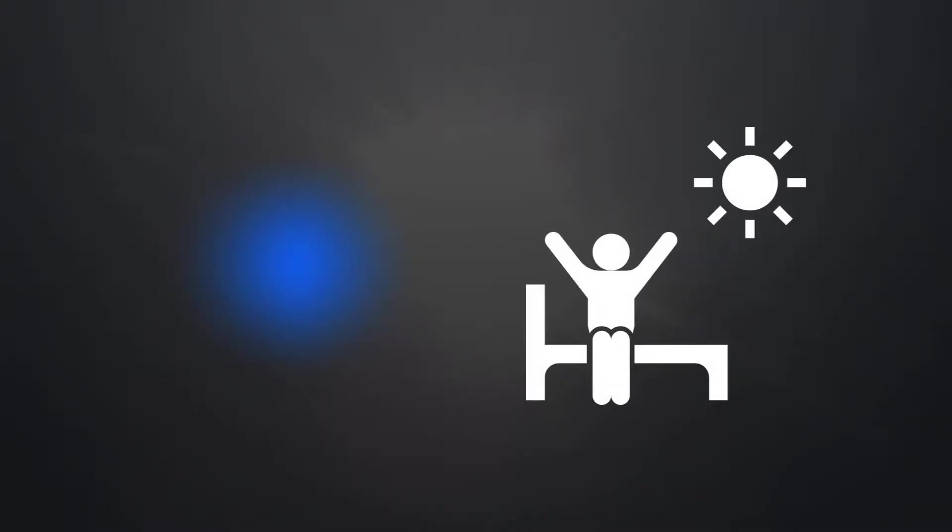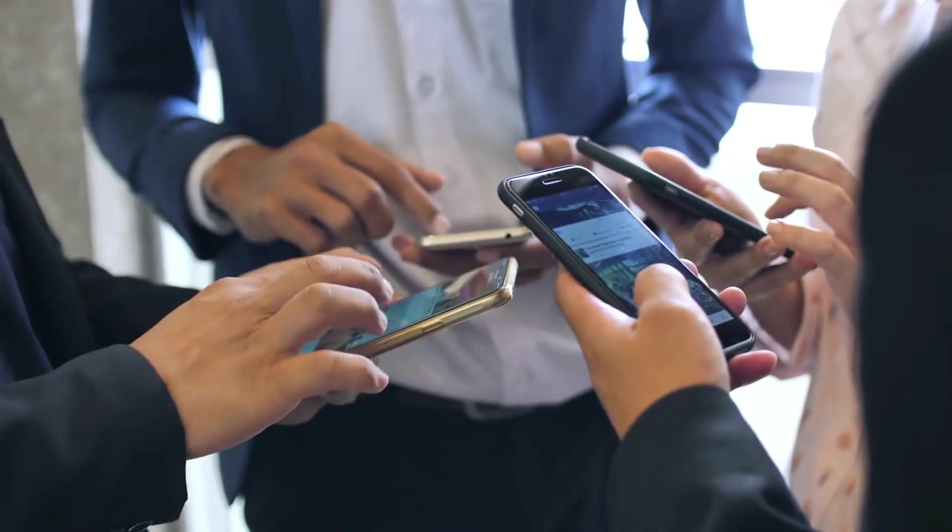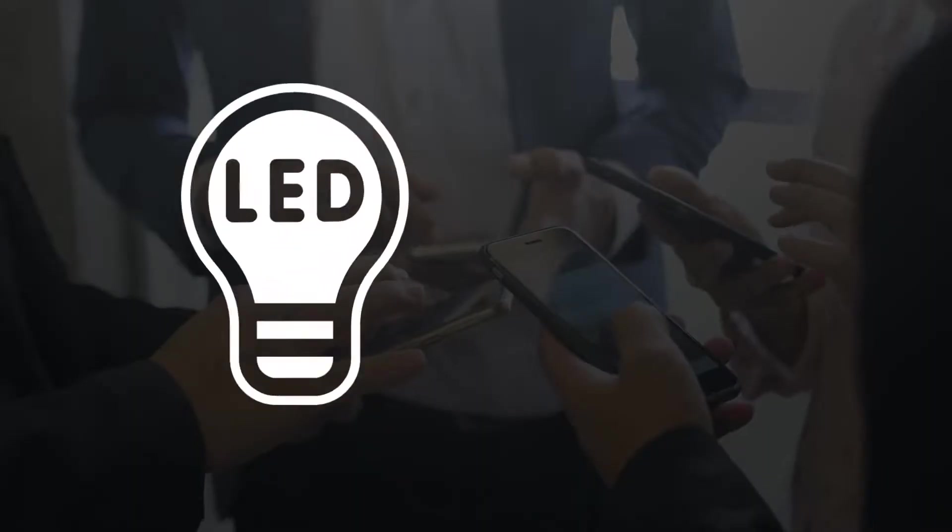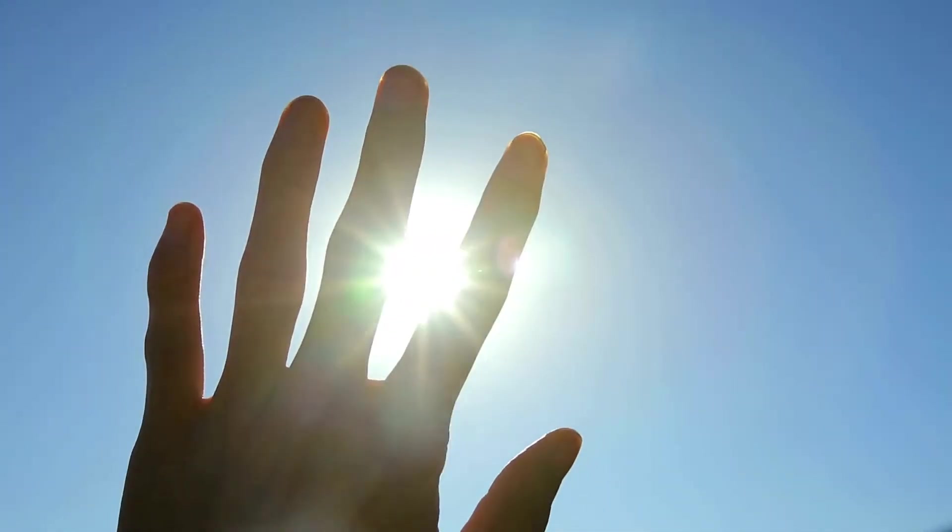Now, sunlight naturally has all the colors, including blue, which helps us wake up and stay alert. But our modern world is overflowing with artificial blue light from screens, LED lights, and fluorescent bulbs. And unlike the balanced mix in sunlight, this constant exposure can mess with our sleep and potentially harm our eyes.